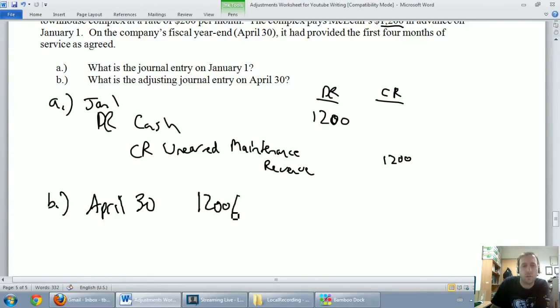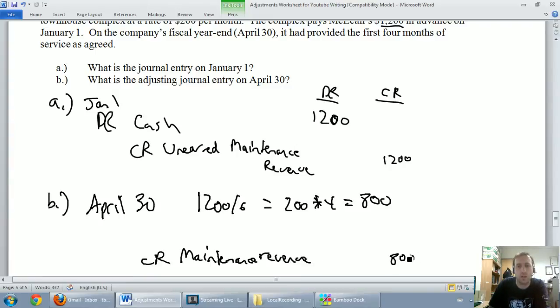So again, it was $1,200 for a six month contract, $200 a month. It actually said that in the question, $200 a month. And we've done January, February, March, April, we've done four months worth of work. We've done $800 worth of work, meaning we've earned $800 worth of revenue. So whenever I earn revenue, I know it's a credit, revenues have to be credited. I'm going to credit maintenance revenue, not unearned maintenance revenue, this revenue has been earned, maintenance revenue, and I've earned $800 worth.